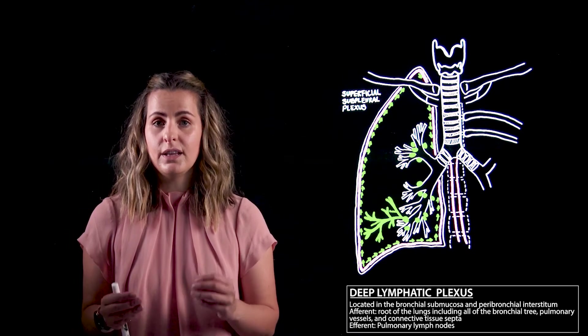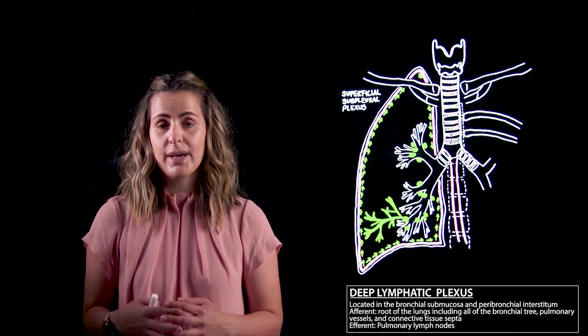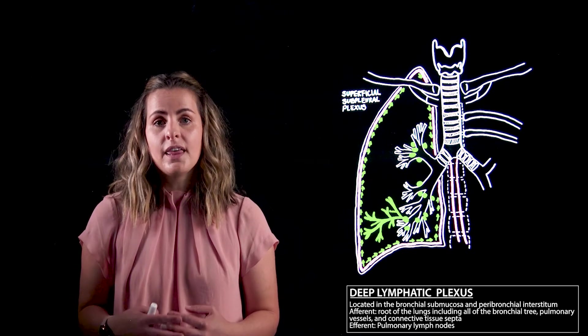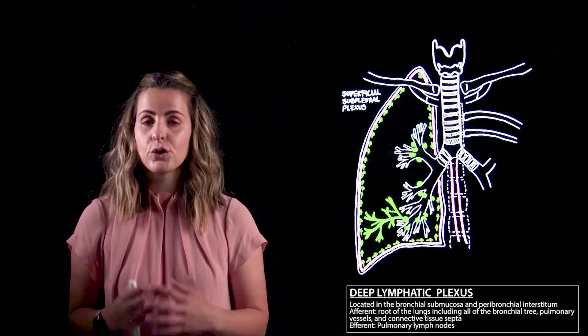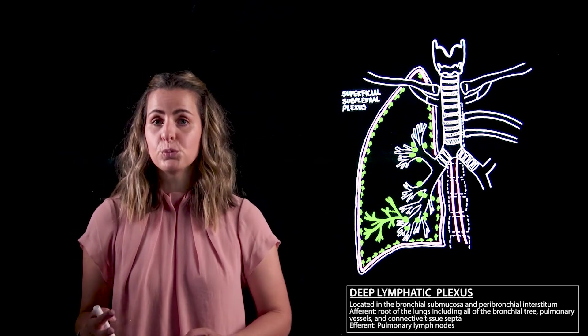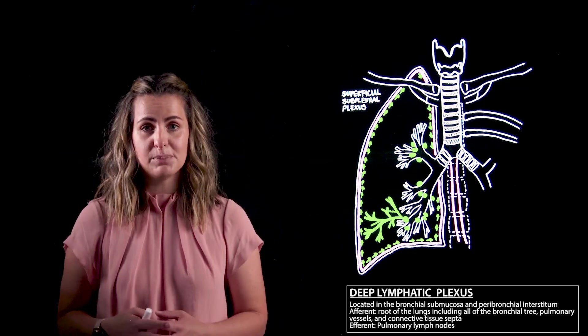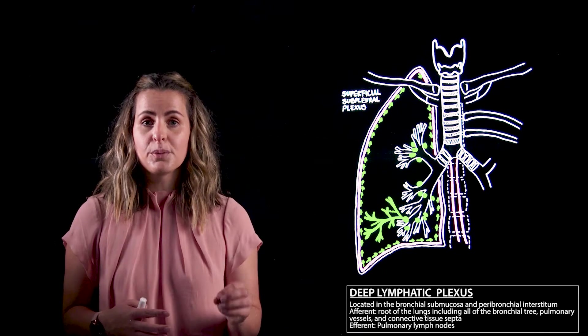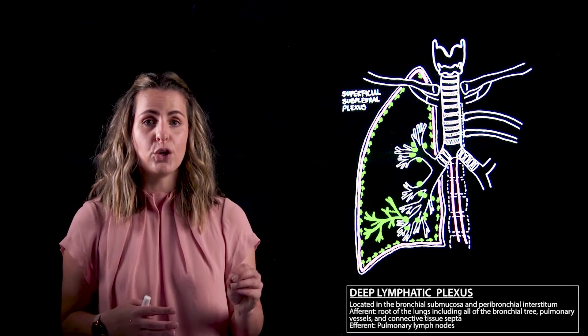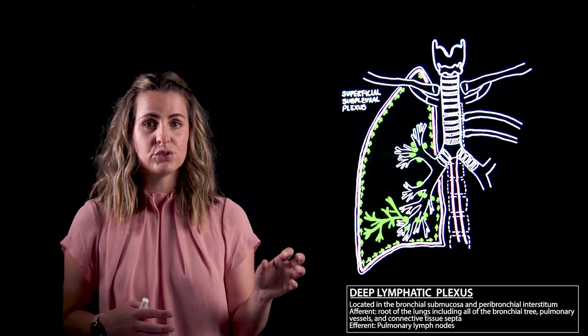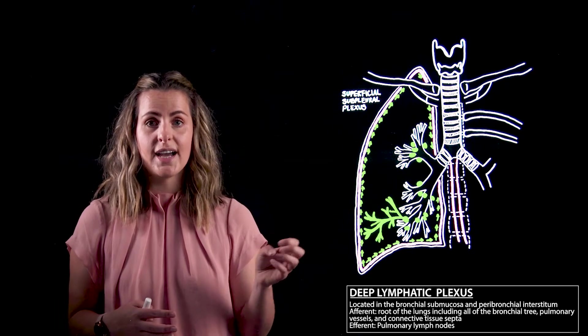The deep lymphatic plexus is located in the bronchial submucosa and peribronchial interstitium. This drains the root of the lungs including all of the bronchial tree, pulmonary vessels, and the connective tissue septa. The vessels from the deep plexus can run along the bronchi and pulmonary vessels in the direction towards the hilum of the lung.